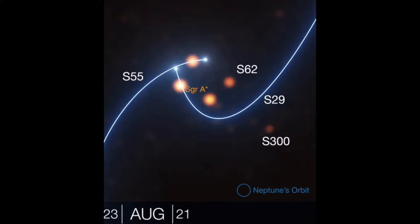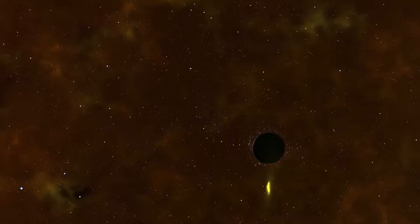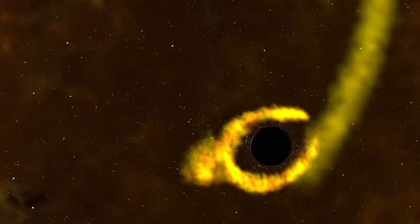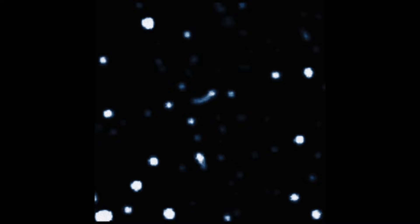Through this setup, they detected gas clumps moving at about 30% of the speed of light. The emission from highly energetic electrons near the black hole appeared as three prominent bright flares, aligning precisely with theoretical predictions for hot spots circling a 4 million solar mass black hole. These flares are thought to arise from magnetic interactions within the intensely hot gas orbiting near Sagittarius A-star.